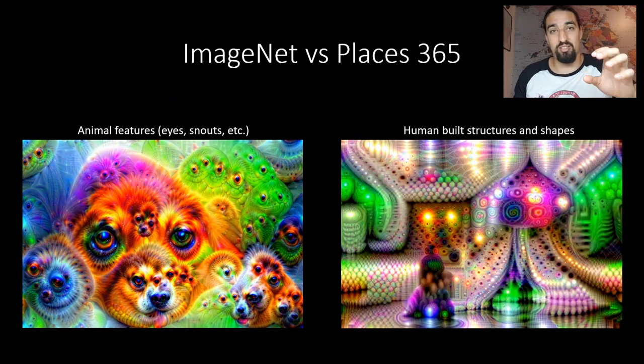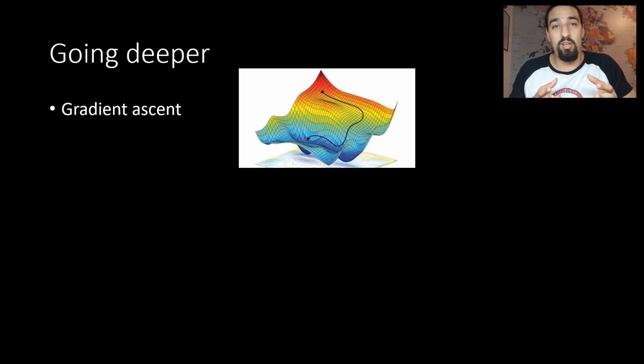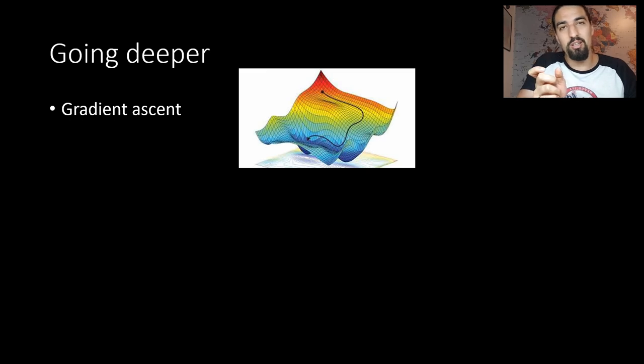Going a bit more deeper into the theory. I already mentioned gradient ascent so basically the only difference is you just change the sign when you do the update. For a single pixel you don't do the minus where you use the learning rate and the gradients, you just switch it to plus.